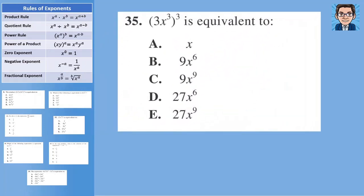The fourth problem is similar to the second — we're raising to the third power. For x, we multiply the threes to get x to the ninth. The three inside the parentheses also has to be taken to the third power, so three to the third is 27. Our answer is E: 27x to the ninth.